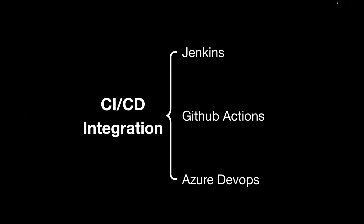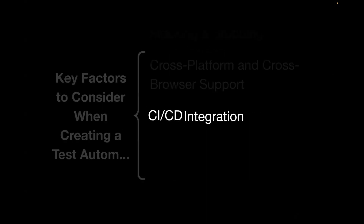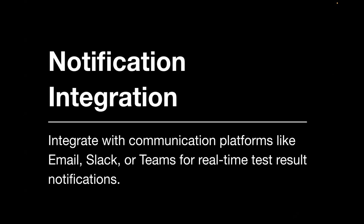The next component is notification integration — it's very important to get real-time notifications. For example, when you're running your tests every morning at 5 AM, you can integrate real-time notifications with Slack or Teams to get quick alerts. Commonly used platforms include email, Slack, and Teams. Depending on the platform your organization uses, go ahead and integrate with that for real-time test result updates.